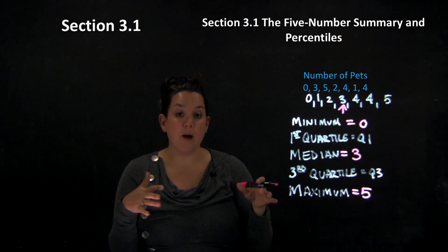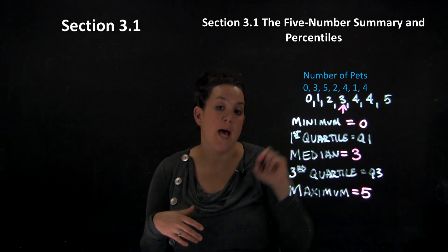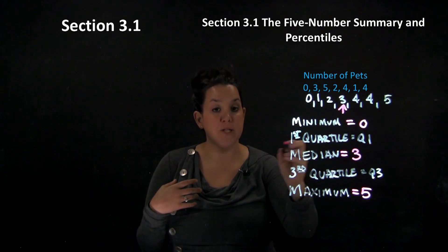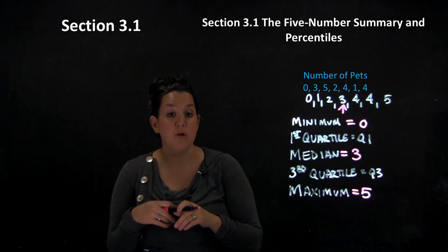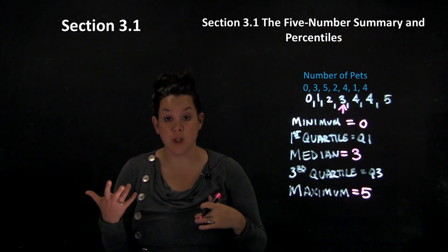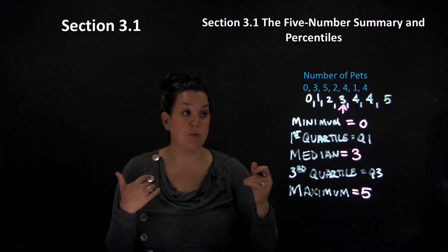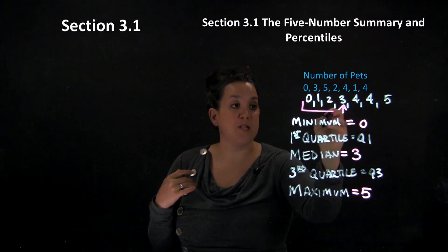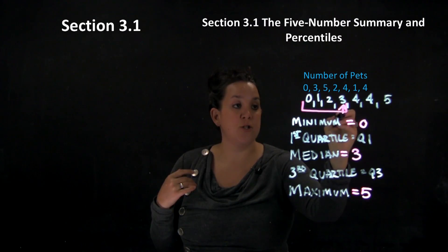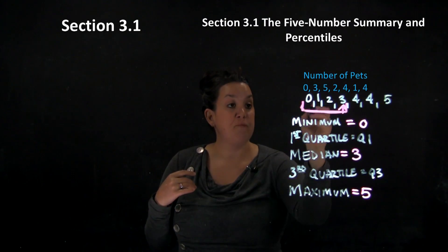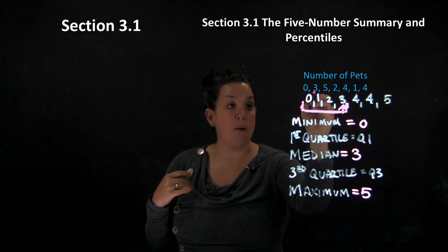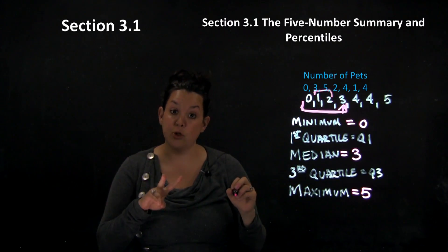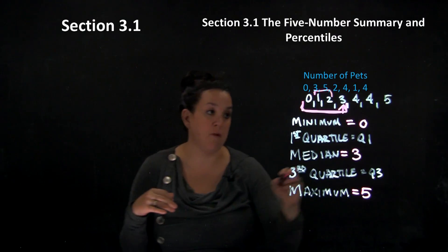If you have an even number of observations, you would actually have to add the middle two and divide by two. For the first quartile, we're going to use the method the book uses, called Tukey's Hinges. In Tukey's Hinges, you find the bottom 50% of the data and include the median. Here, the middle of that bottom 50% is going to be two measurements because there's an even number of observations.